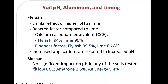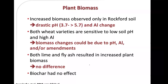The wood-based biochar had only 1.5% calcium carbonate equivalent, and the grass-based biochar had 5.4%, which explains why biochar had no pH effect. Plant biomass increased only in the Rockford soil, where pH increased from 3.7 to 5.7. Both wheat varieties were sensitive to low pH, and the biomass changes observed could be due to pH, aluminum, or changes in fertility. Both lime and fly ash resulted in increased plant biomass with no difference between them, suggesting fly ash could be an alternative to lime. Biochar had no effect.